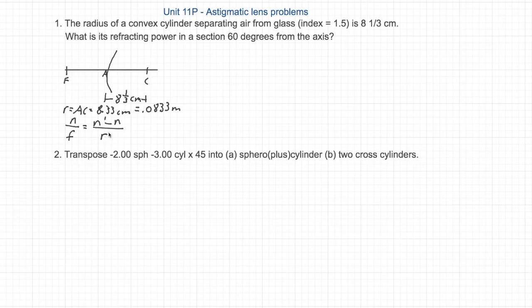The formula is N over F equals N prime minus N over R, R in meters. So we'll plug in what we know. N equals 1, N prime equals 1.5.